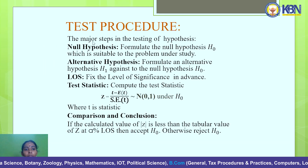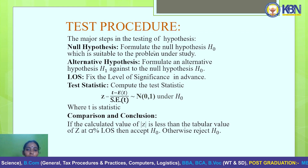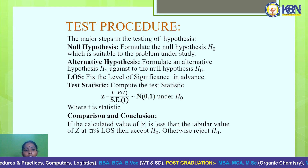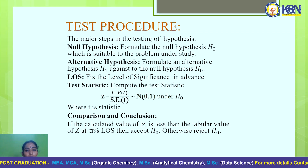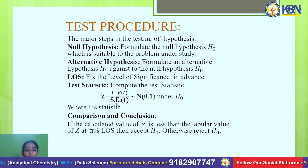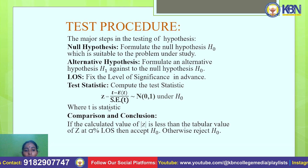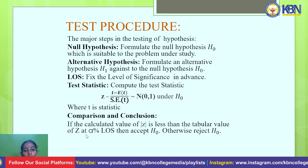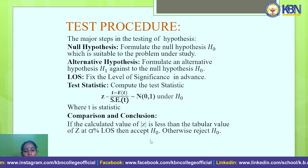We have a test procedure with mainly five steps. First, formulate the null hypothesis suitable for the problem. Second, state the alternative hypothesis. Third, fix the level of significance (LOS). Fourth, compute the test statistic: Z = (T − E(T)) / SE(T), which follows standard normal distribution, where T is the statistic. Fifth, comparison and conclusion: compare the calculated Z with the tabular Z at the appropriate level of significance. If the calculated Z is less than the tabular Z, accept the null hypothesis; otherwise reject it.